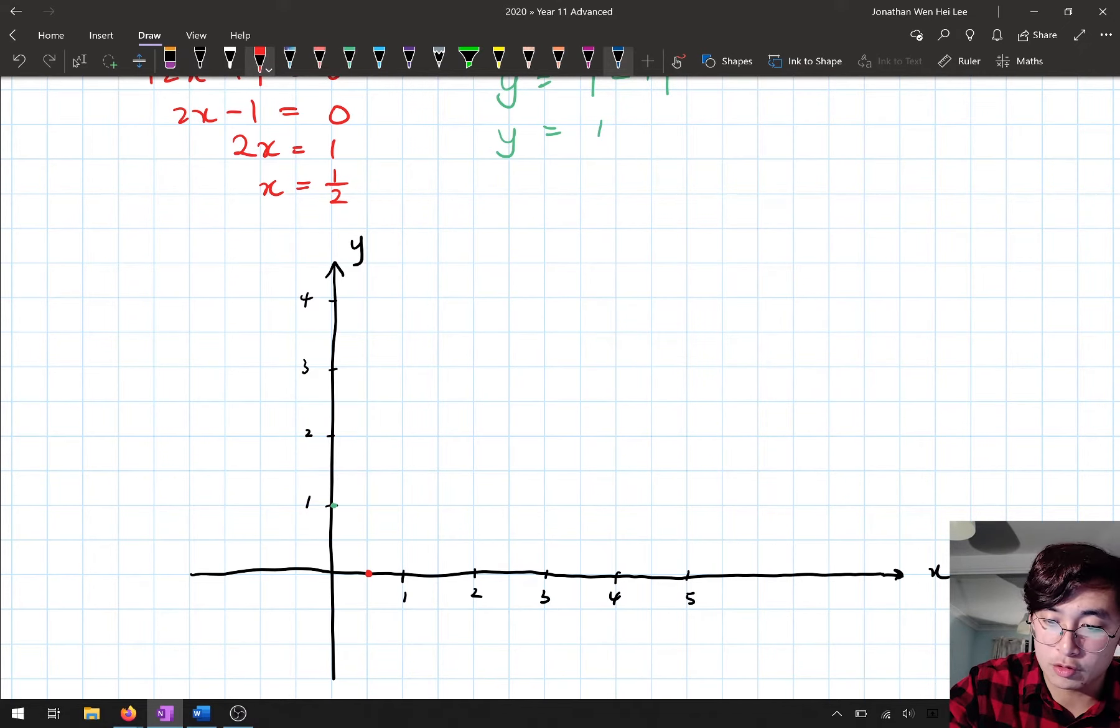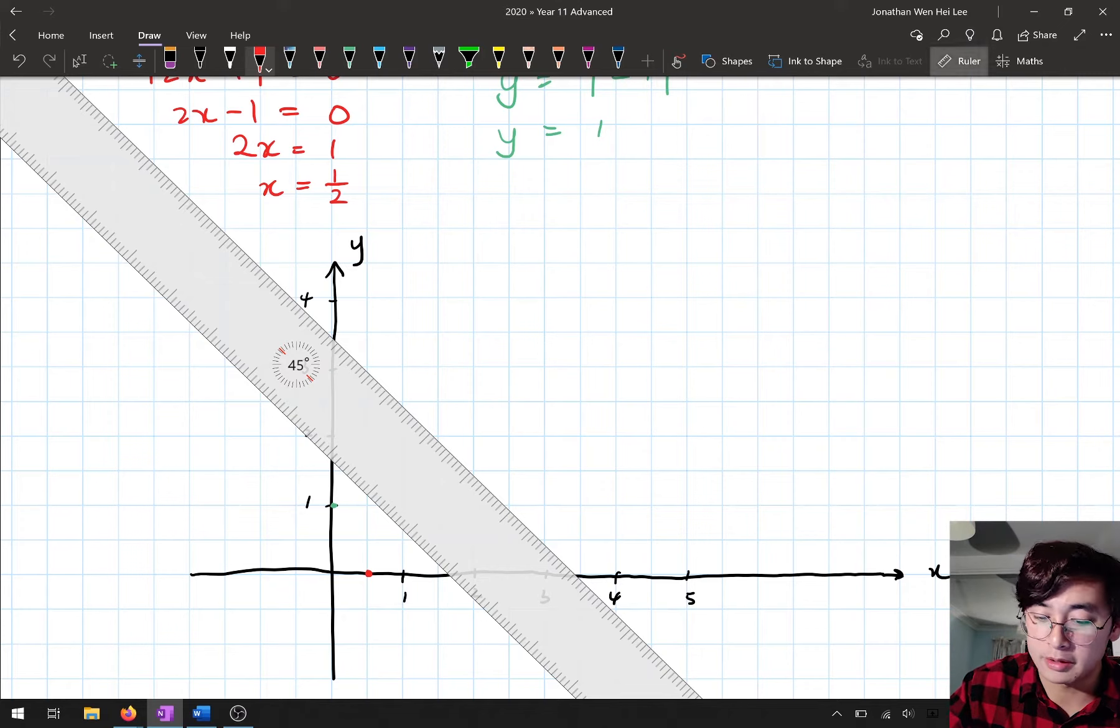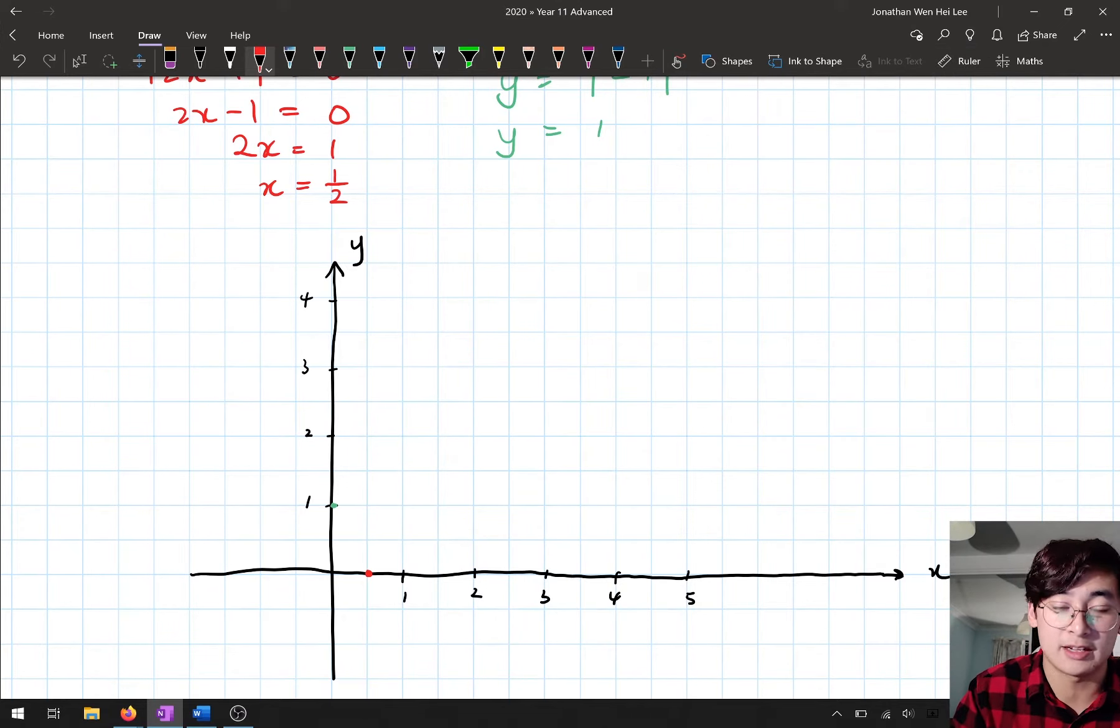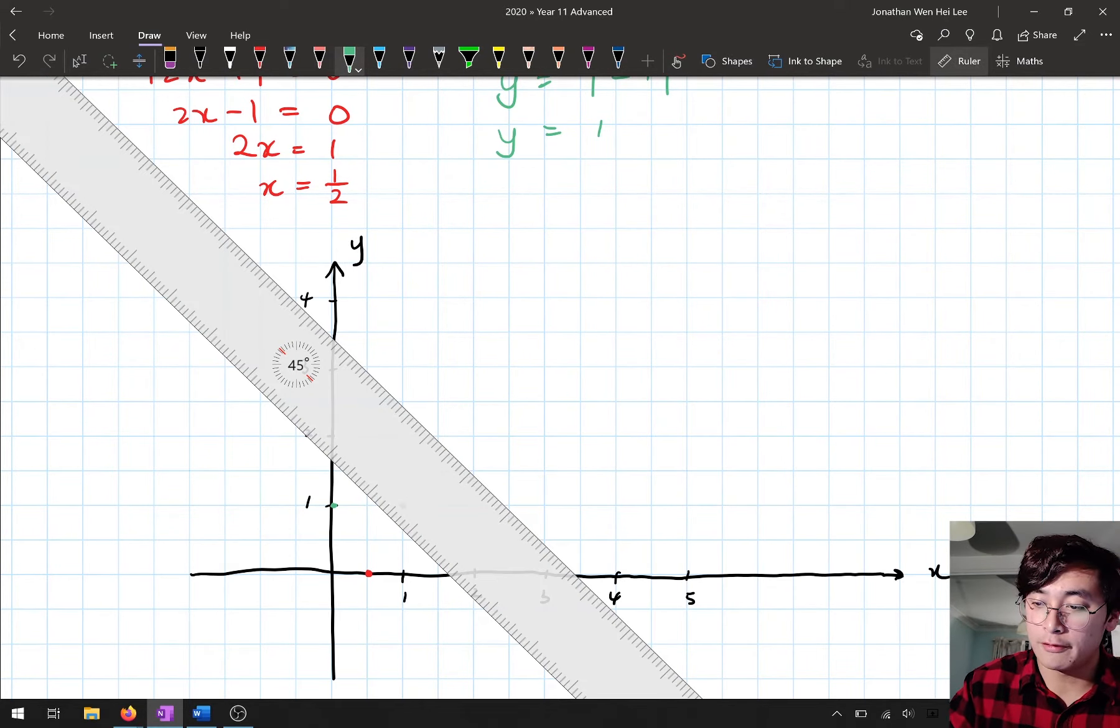I'm going to draw it in blue, just so we can see it. Oh, actually, I'll draw it in red. And the other thing was, it's symmetrical, so I can just go on the other side of my vertex and find a point that's symmetrical, which is at (1, 1).